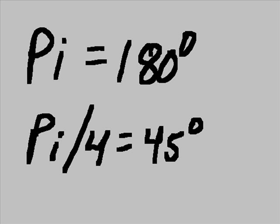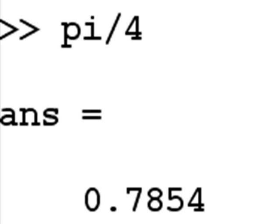Pi equals 180 degrees. Pi over 4 equals 45 degrees. 4 into 180 is 45. So pi divided by 4, answer equals 0.7854.